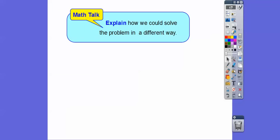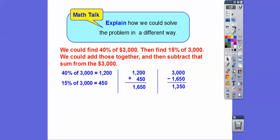Explain how we can solve that problem in a different way. Well, we could find 40% for the rent of 3,000. 40% of 3,000 is $1,200. Then we can find 15% of the 3,000. We can add those together to be $1,650. And then we can subtract that from the total. If we subtracted that from the total, we'd find out she has $1,350 left for other expenses.